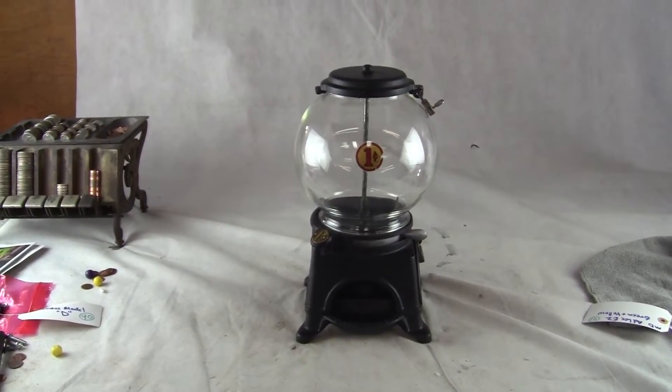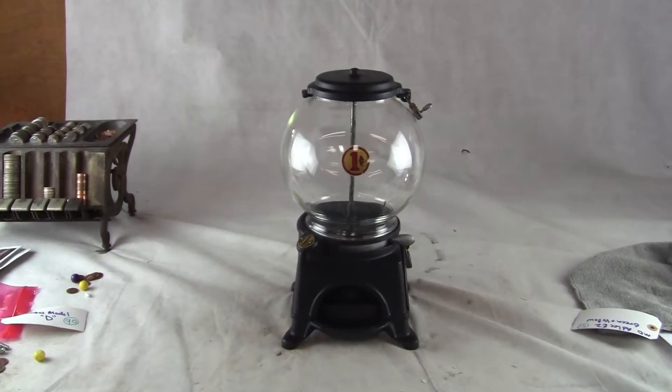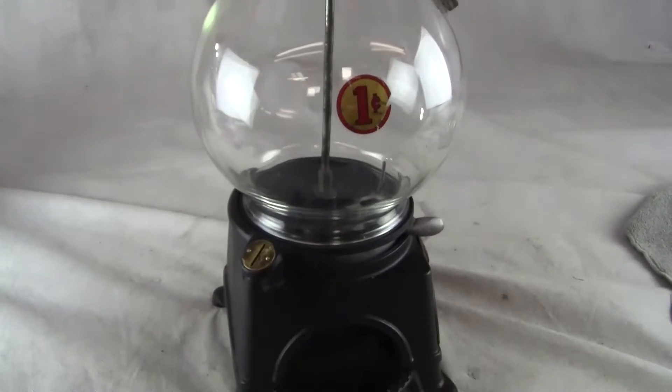Okay, up for auction. Up for sale is an original Columbus Model D cast iron gum vendor machine.